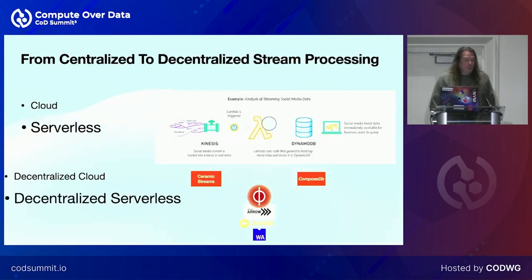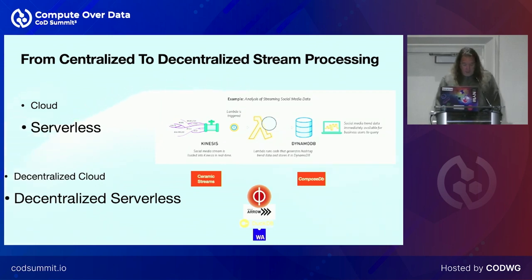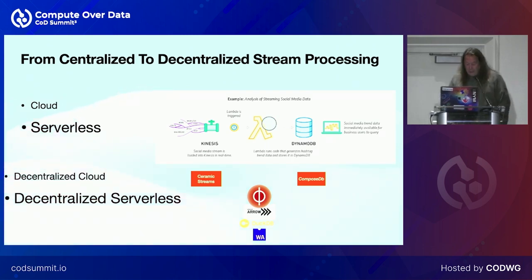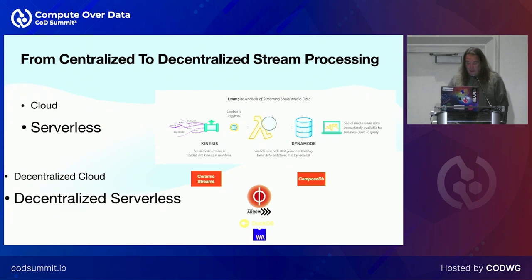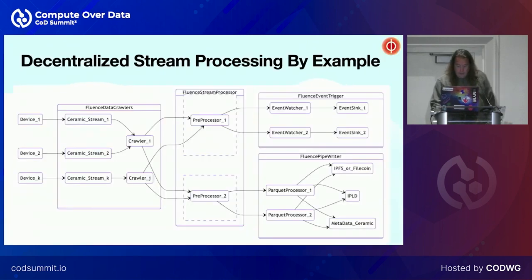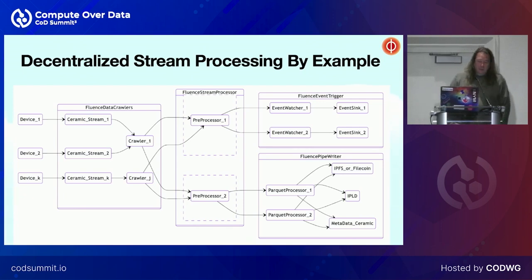Going back to what we want to do — the serverless component with Fluence — we can compile some of the Apache error tools to WebAssembly. DuckDB is also something we have almost ready for WebAssembly. We write custom WebAssembly modules to interact with other pieces, including CeramicStream and ComposeDB. So how do we go and do it now? Let's say you have some devices — peer logs, temperature sensors, it doesn't really matter — dumping data into CeramicStreams instead of Kafka, for example.